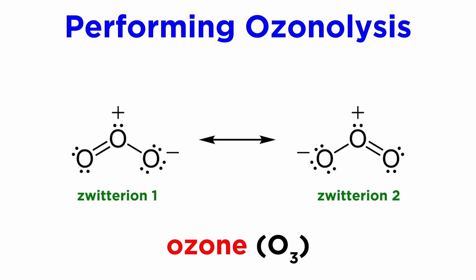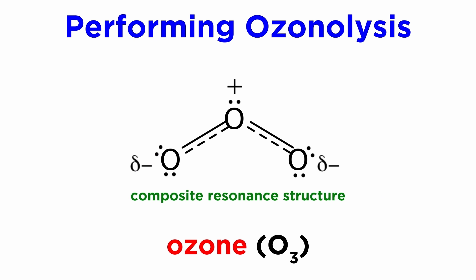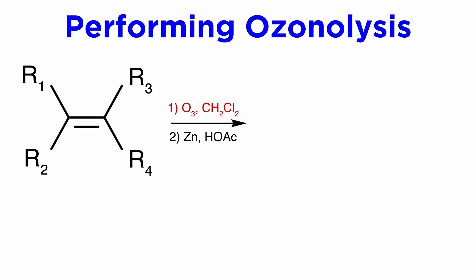If we depict this as a discrete resonance structure, it would be this zwitterion here, with a positive charge here and a negative charge here, although we certainly could draw a composite resonance structure as well. The first step utilizes ozone in dichloromethane, and the second step involves zinc and acetic acid.